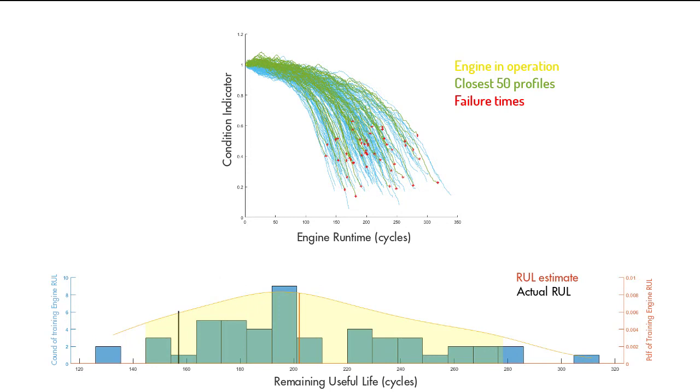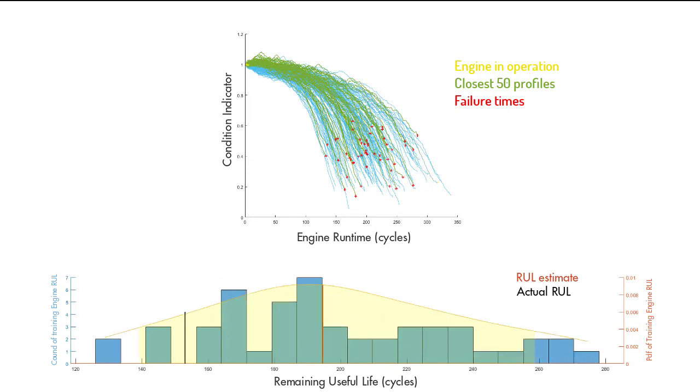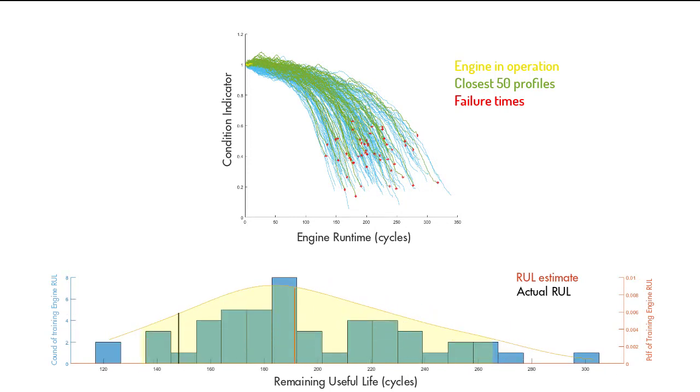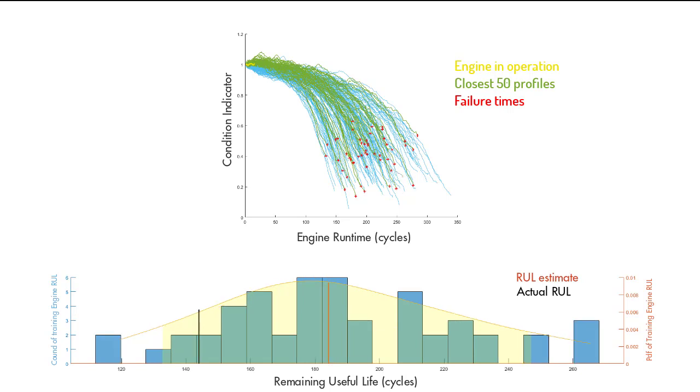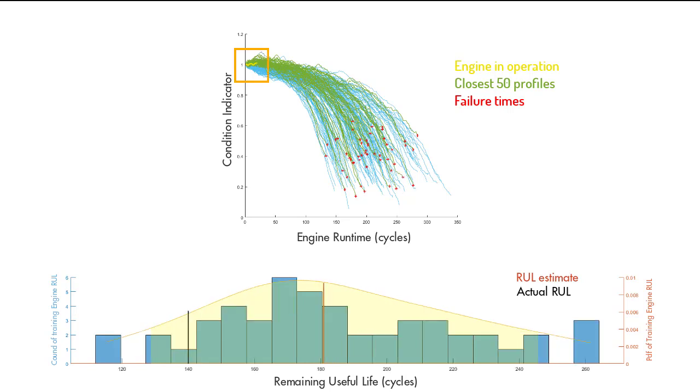If we rewind to the beginning of the animation, we see that the data fed to the model from our engine is only this much. And the prediction is 40 cycles off from the true value.